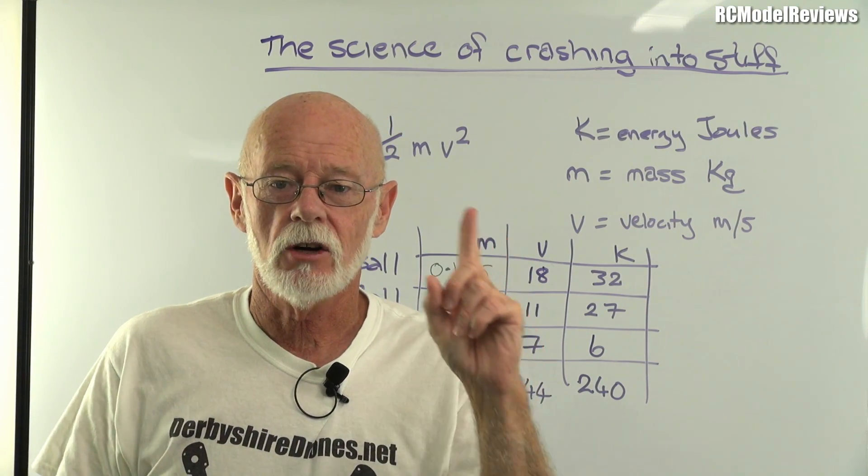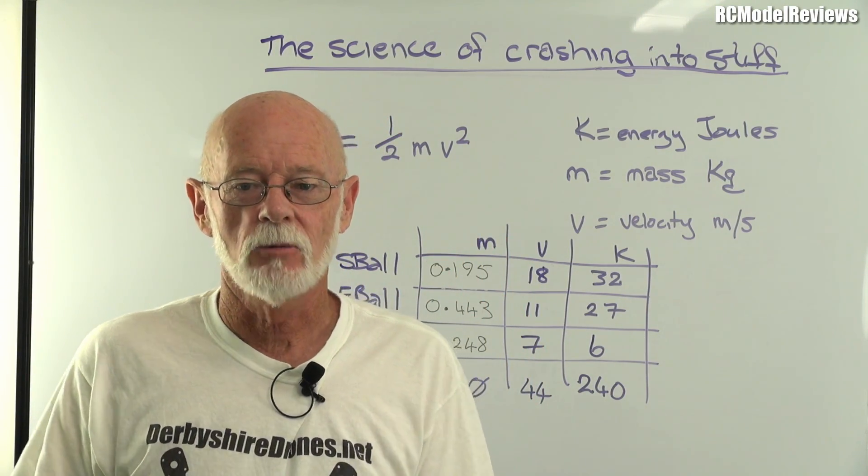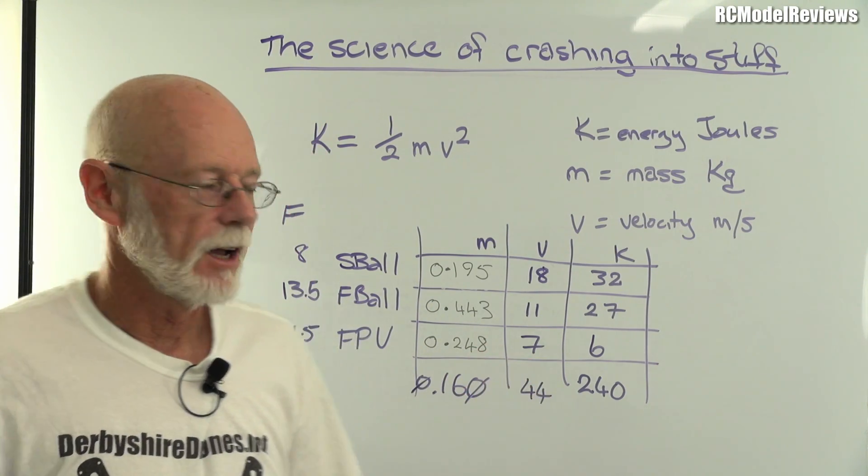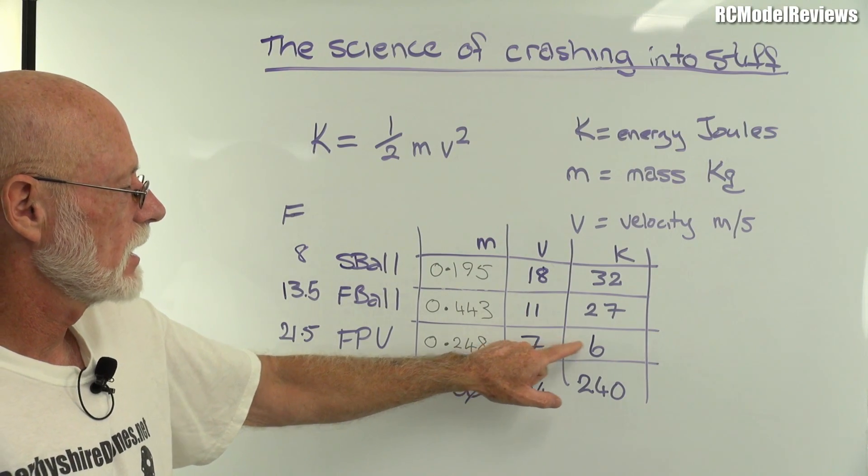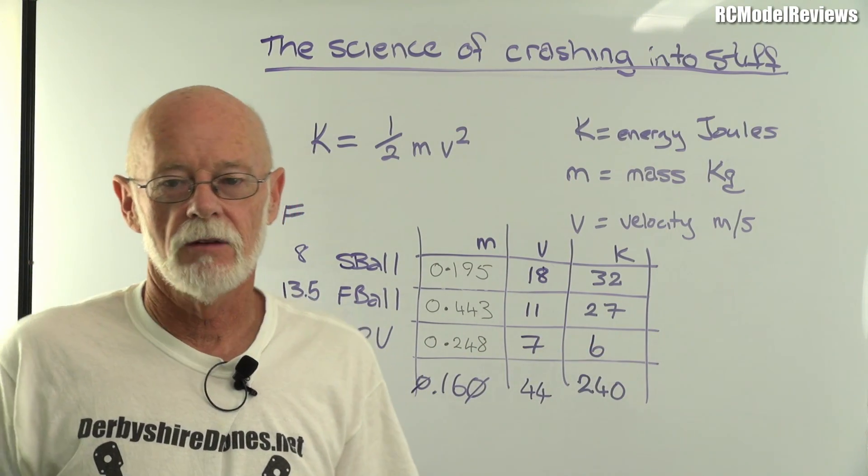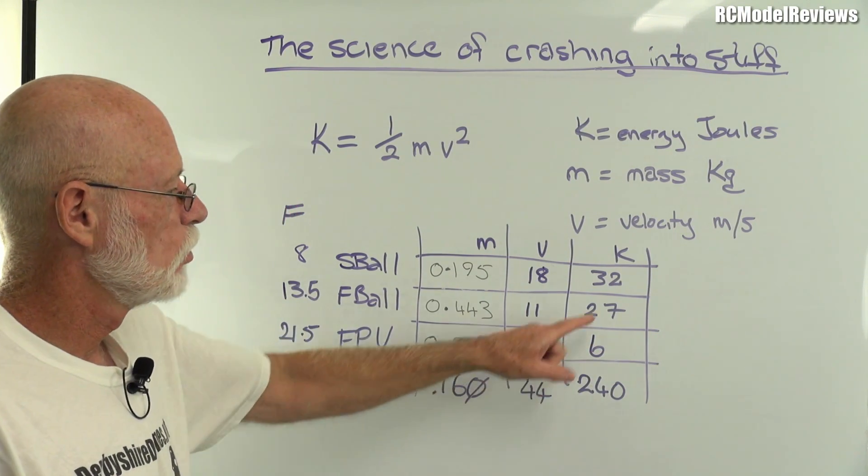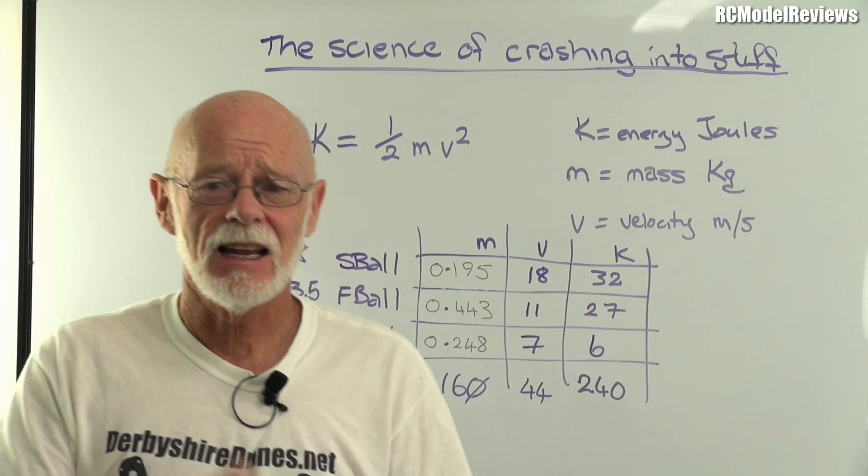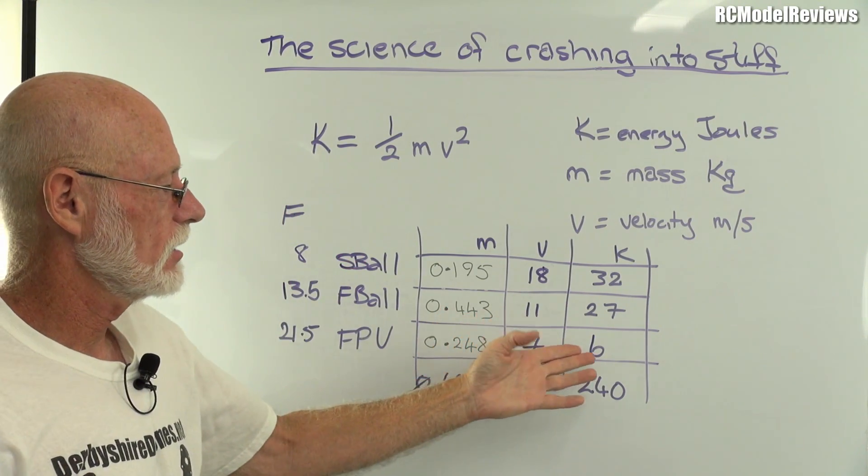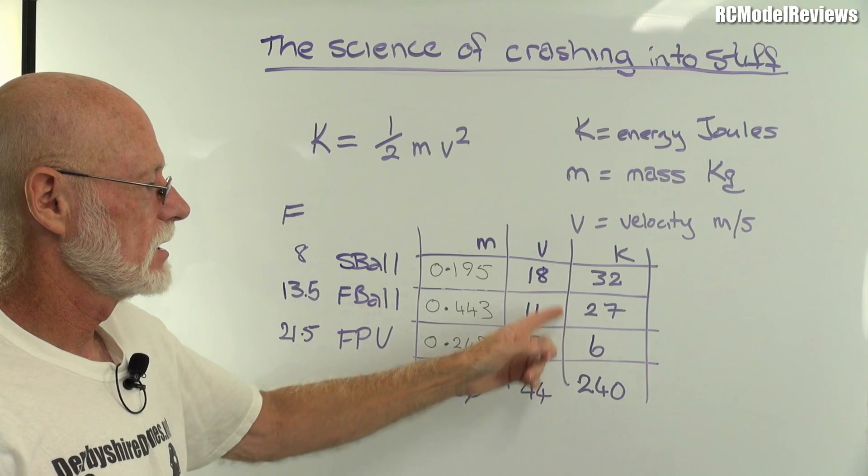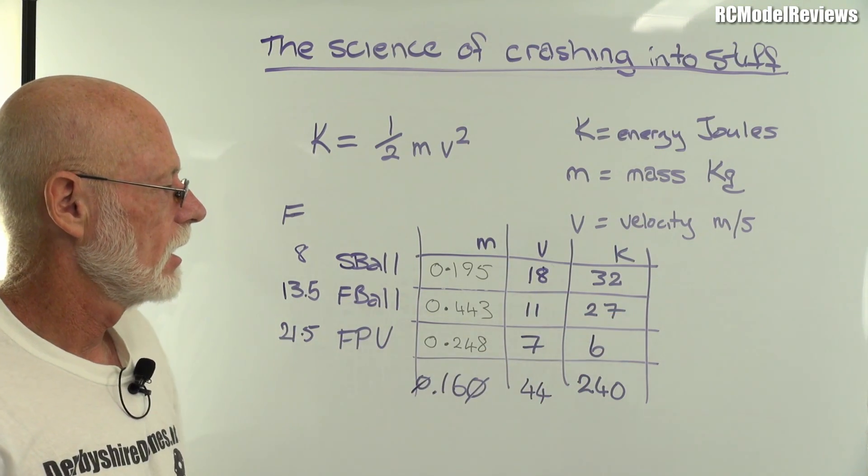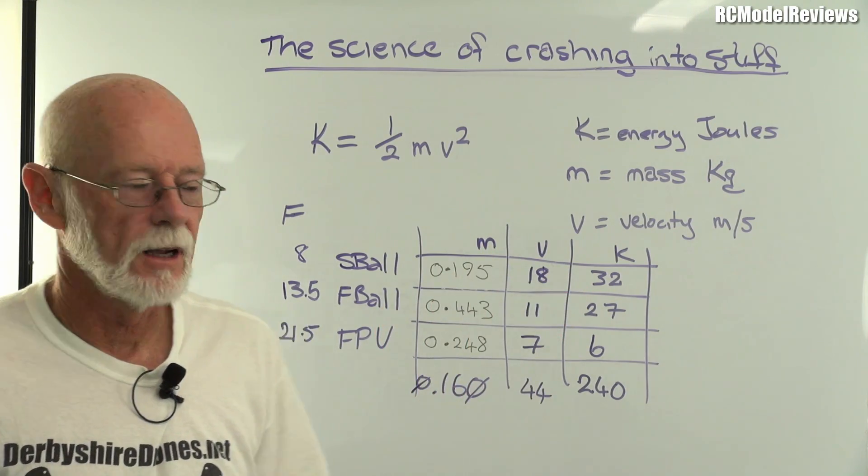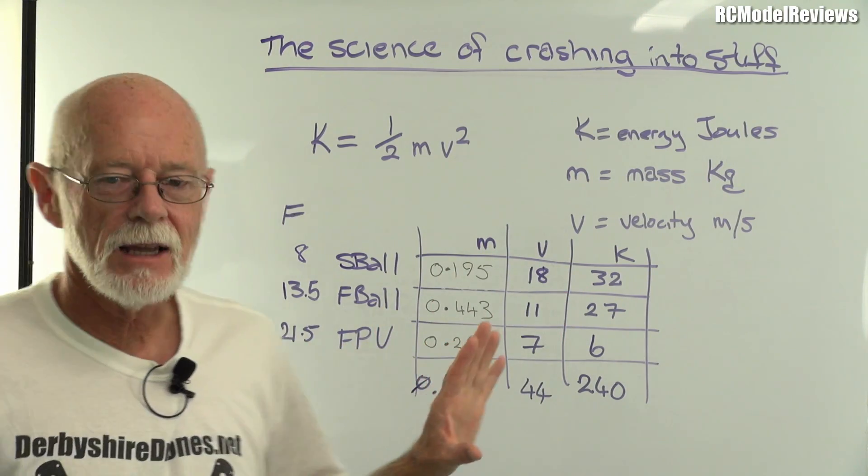The shocking one, the one that will shock you and will piss off all the people who criticized me for flying this little model in the park, is the FPV model traveling at 7 meters per second: 6 joules of energy. Work that out - that's less than one-fifth of the softball, it's nothing at all. It's less than a quarter of the energy of the football.